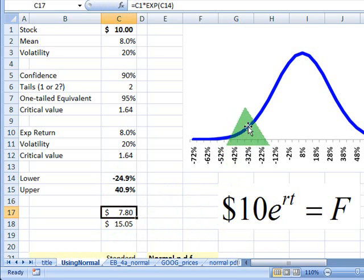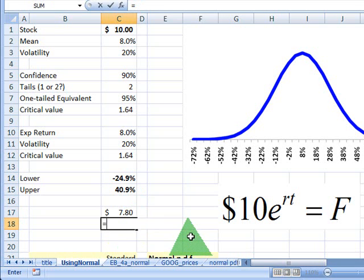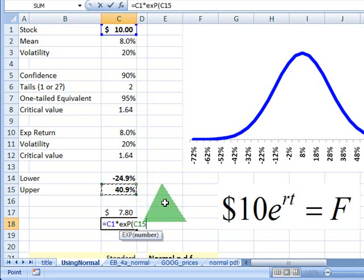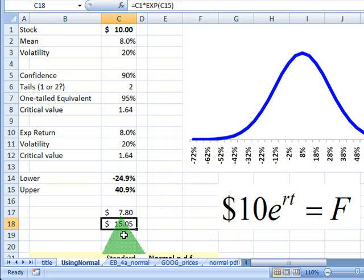That represents the price I would get at the left end of my interval. And I do the same thing at the right end. I say $10 multiplied by the exponential function of my 40% return gets me $15. So now, I've used those returns to estimate future stock prices.